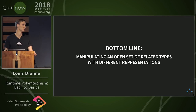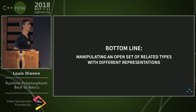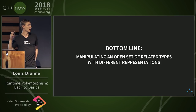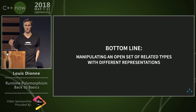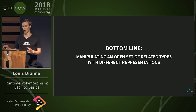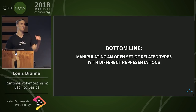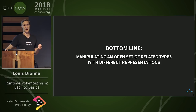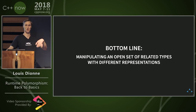The bottom line is you need runtime polymorphism when you have an open set of types — not a closed set. They have a related interface and different representations. Does that make sense? Ask questions as we go.